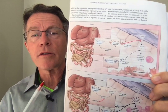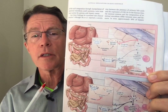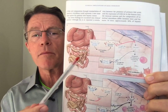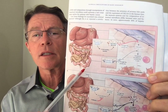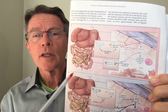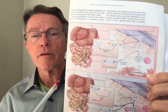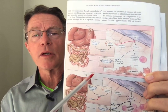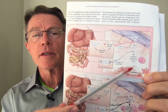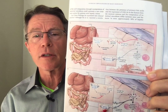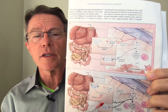When someone does have a cancer — especially lung cancers and other types that tend to metastasize — those cells travel through the body in the bloodstream, and because the liver is a big filter, it tends to catch a lot of these cells.